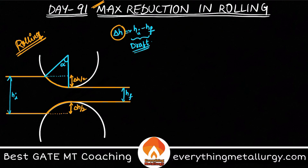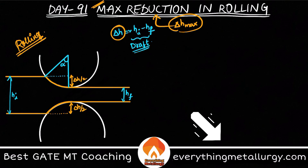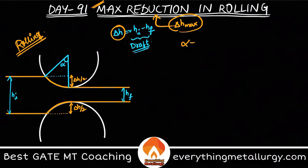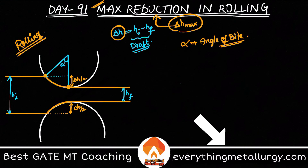Maximum reduction is the maximum draft, which can be written as delta h max. Delta h max, or the maximum draft, is what we call the maximum reduction in rolling. Now, what is alpha here? Alpha is called angle of contact or angle of bite — the angle between the entrance plane and the central line of my rolls.